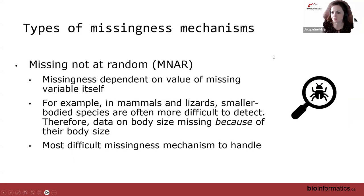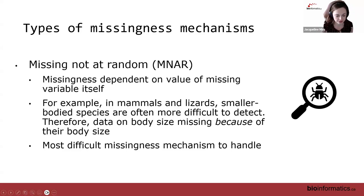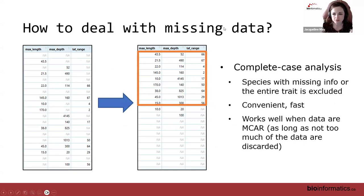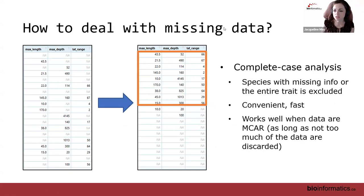Missing not at random is the most difficult missingness mechanism to handle. Many imputation methods unfortunately can't handle it, though there are some more advanced methods available. People often use complete case analysis, where species with missing information or entire columns are excluded. This is convenient, fast, and works well when data are missing completely at random, as long as we're not throwing away too much of the data.